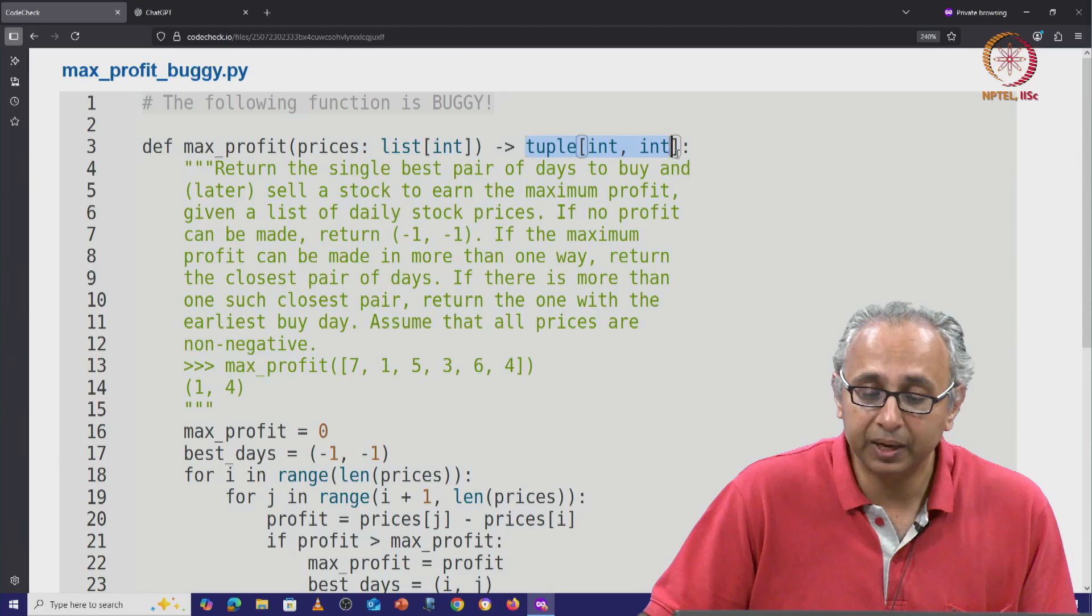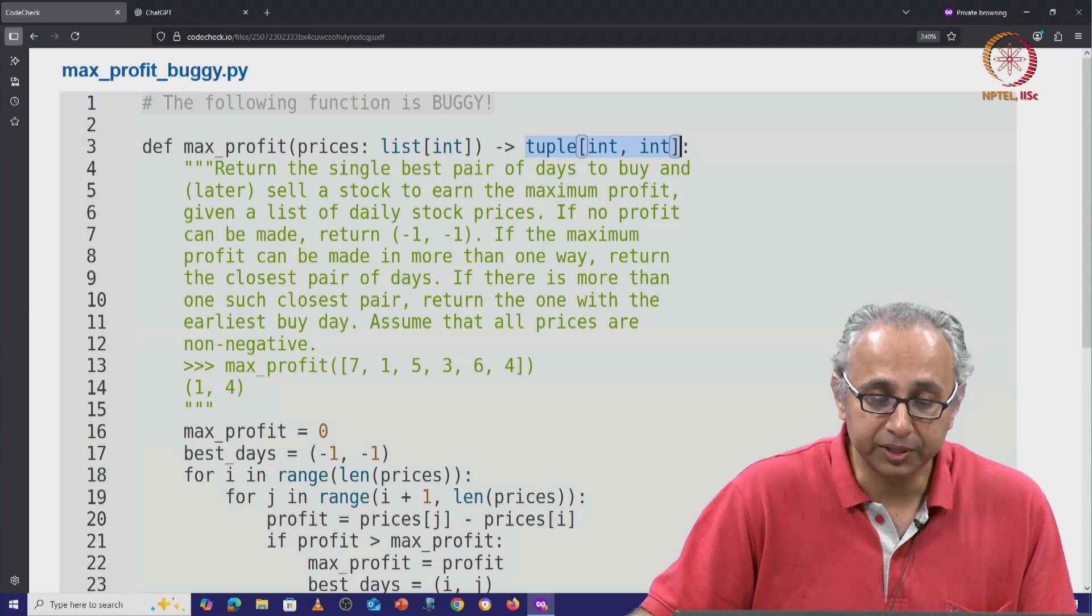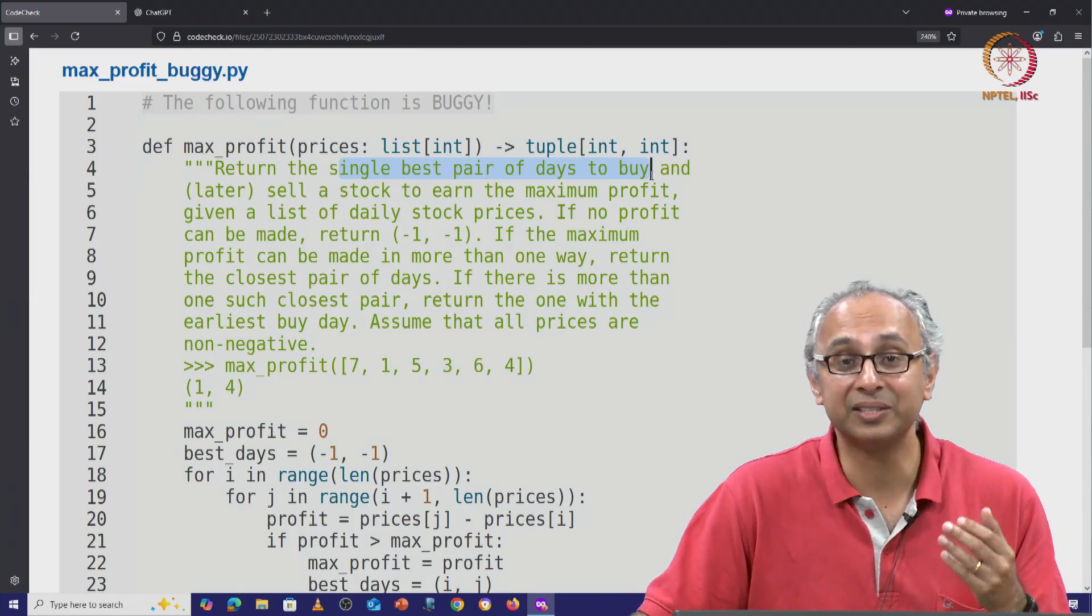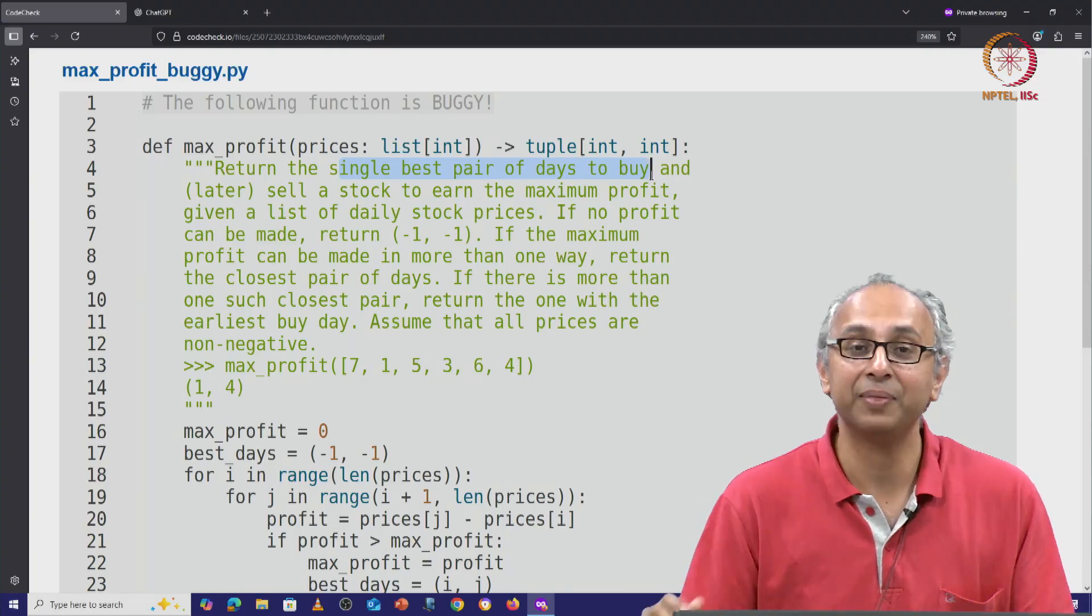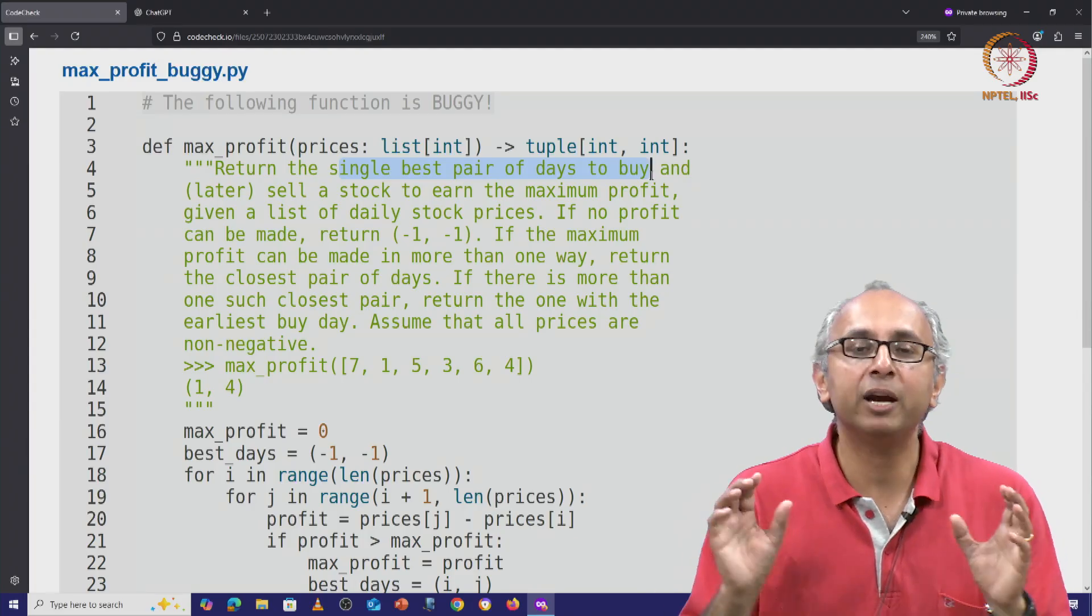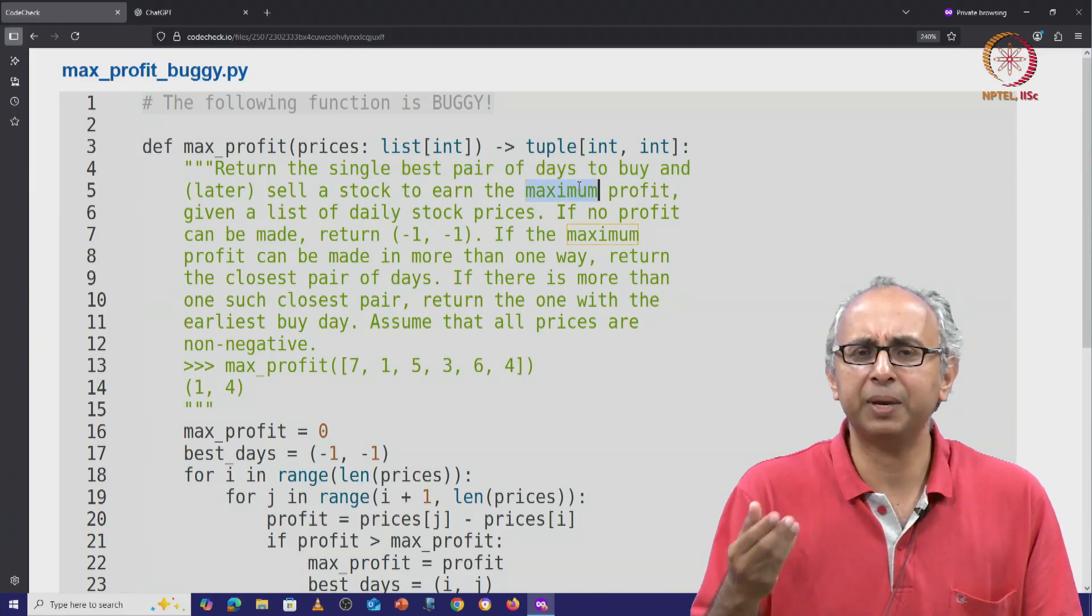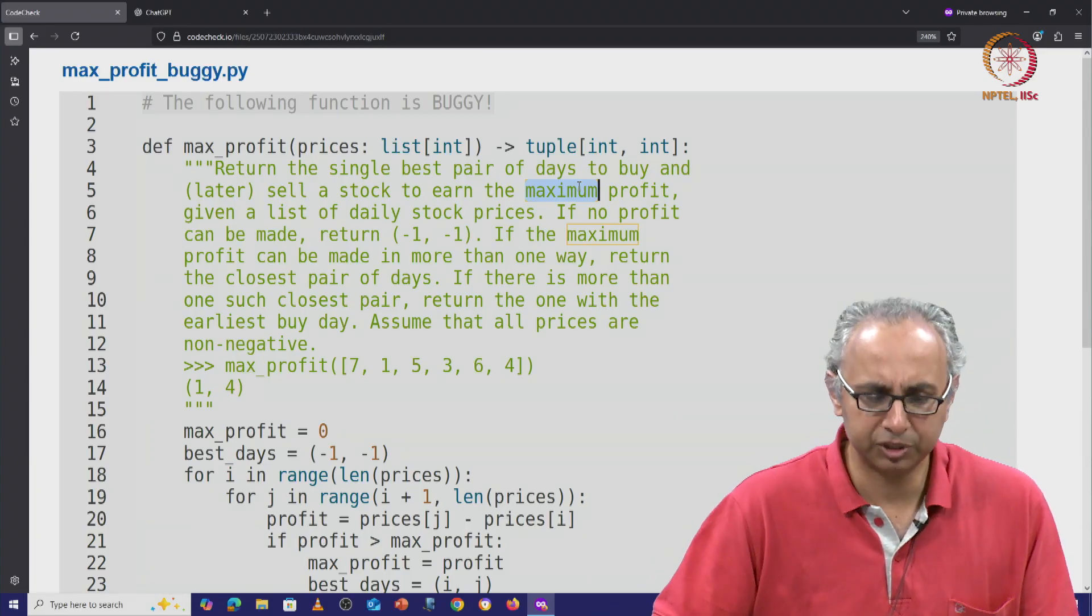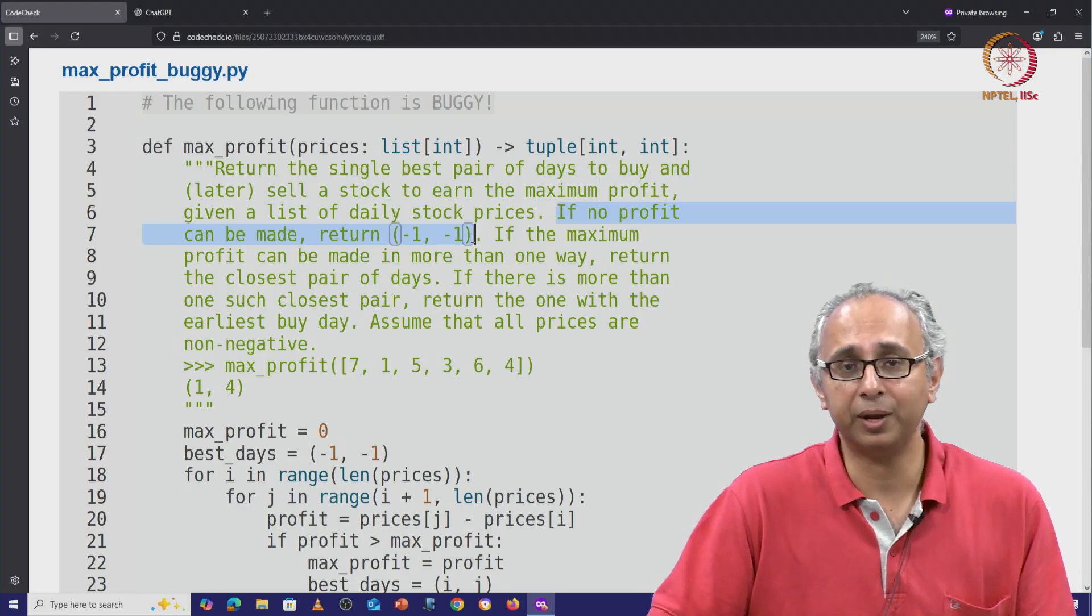And it is returning a tuple, a pair of integers. It tells us that the function is supposed to return the single best pair of days to buy and then later sell this stock. So of course we can't cheat by buying late and selling early. That would be reversing the order of time. We have to buy first and then later sell that stock. So we have to find the best days on which to buy and sell the stock in order to earn the maximum profit. The best day would be some index i to buy and then some later index j to sell. If no profit can be made then we have to return the special pair minus 1, minus 1.